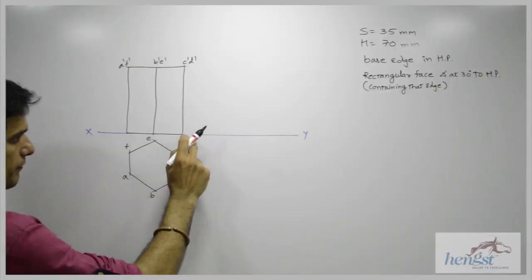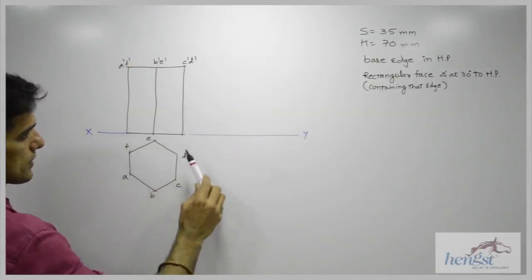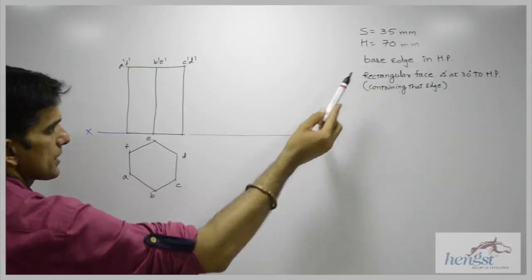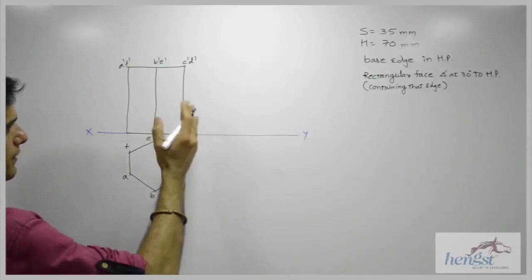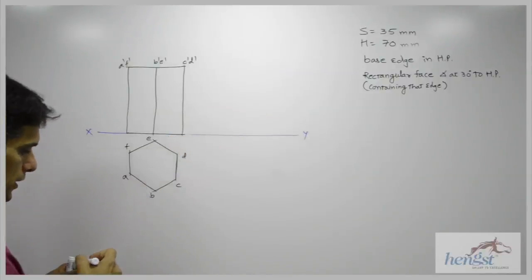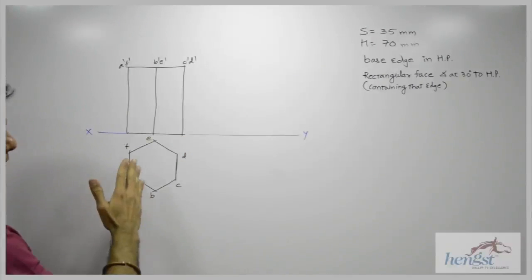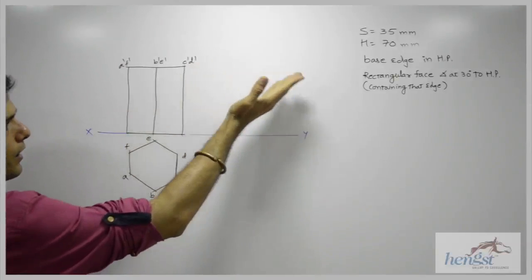See why I have drawn it like this? They have mentioned base edge in HP. So this is the edge, so it has to be on the right hand side. Because when you tilt, it has to be on the xy line. So whenever they say base edge, that edge has to be on the right hand side because we will tilt it on the right hand side.